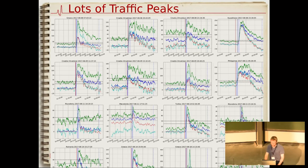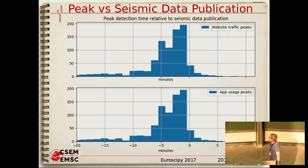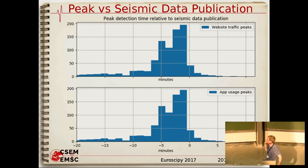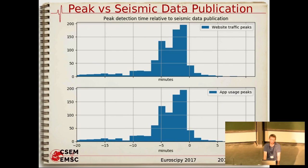They want to know right away what's going on. What we see here is a graph of when we detected the peak versus when there was an official publication of an earthquake detection — and it's negative. We're actually detecting the peaks up to five minutes, or sometimes even 20 minutes, before there's any seismic detection. This really gives us an advantage because we don't want people coming to our website after an earthquake and not seeing anything — and then thinking we don't know anything about earthquakes because they know more than us.